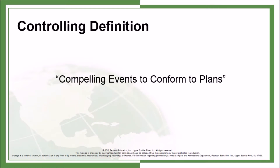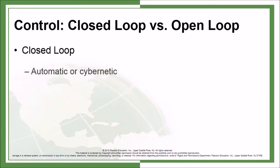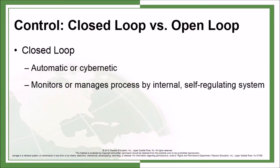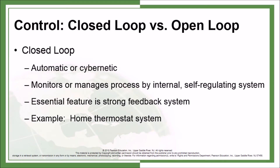Controlling is defined as compelling events to conform to plans. Control: closed loop versus open loop. Closed loop is automatic or cybernetic — it monitors or manages a process by an internal, self-regulating system. Its essential feature is a strong feedback system. Example: a home thermostat system.